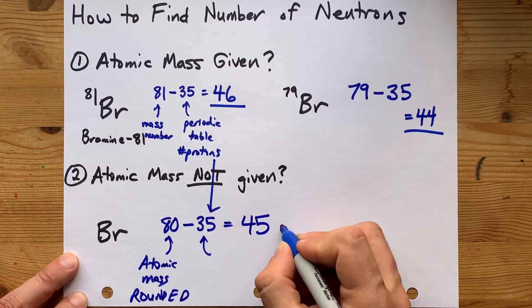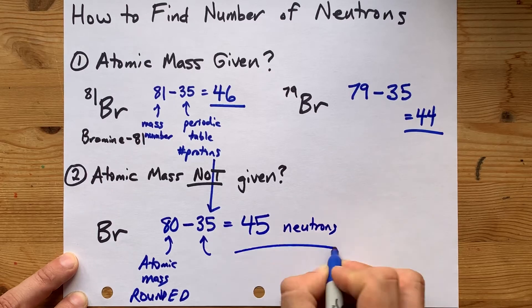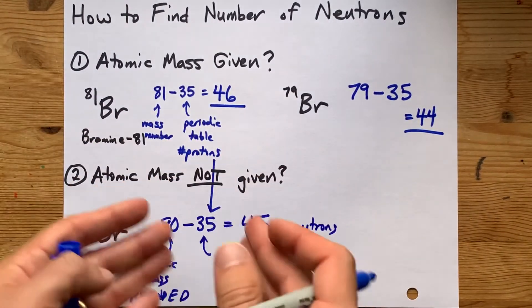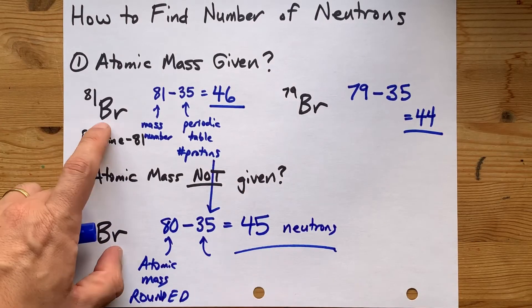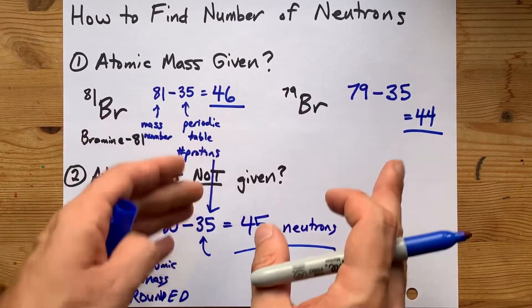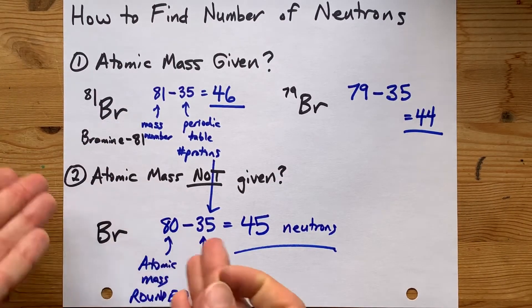This particular question would say that bromine has 45 neutrons. That is impossible in the real world, but you don't necessarily know that unless you know that there's some bromine 81s in the world and some bromine 79s, and there's just enough of both that on average they weigh 80 each.